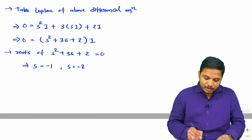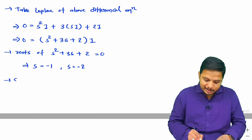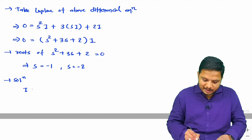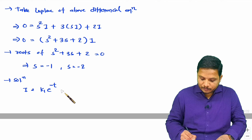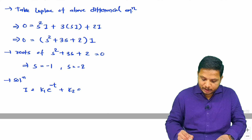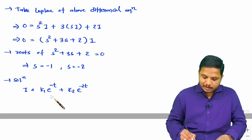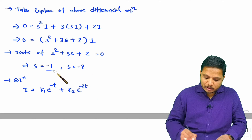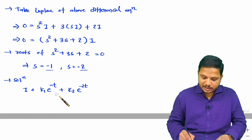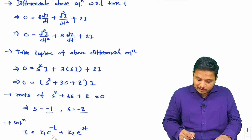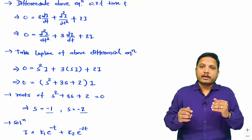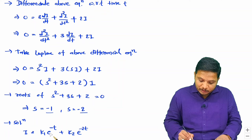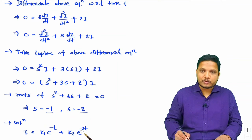Based on these two roots, the general solution is: i(t) = k1·e^(−t) + k2·e^(−2t). Now we have the current expressed as an equation, and we need to identify the values of the constants k1 and k2 using initial conditions.